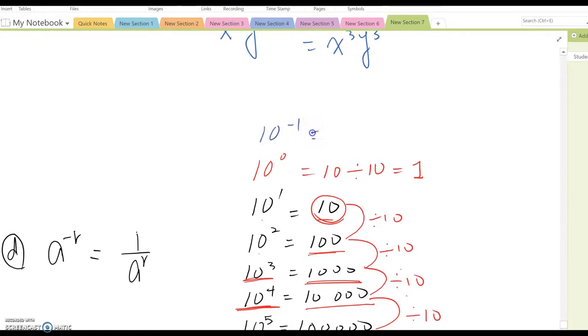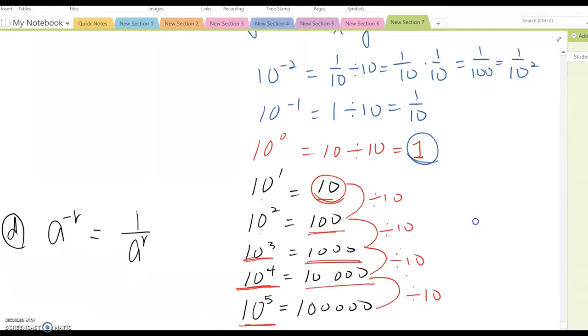10 to the negative 1. 10 to the negative 1, which is 1 divided by 10, which means 1 over 10, and 10 to the negative 2 means 1 over 10 divided by 10. Multiply 1 over 10, so become 1 over 100 or 1 over 10 squared.